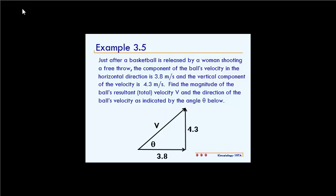the component of the ball's velocity in the horizontal direction is 3.8 meters per second, and the vertical component of the velocity is 4.3 meters per second. Find the magnitude of the ball's resultant total velocity and the direction of the ball's velocity as indicated by the